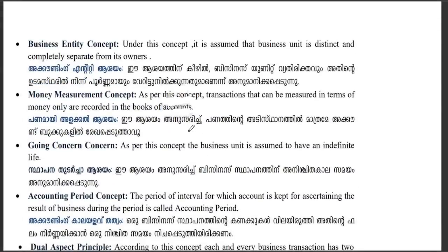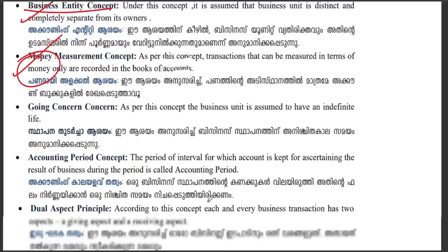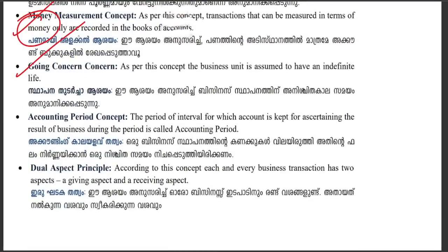What is the business entity concept? The business entity concept treats the business as separate from its owners. Then the money measurement concept — only transactions measurable in money are recorded. The going concern concept assumes the business will continue to operate.